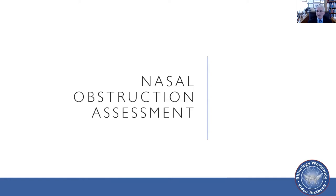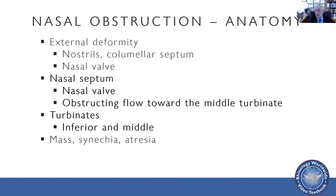How do you assess nasal obstruction in a patient? You assess the patient's anatomy, and external deformities can cause problems — deformities of the nostril, nasal valve, etc. In this chapter, we're covering the nasal septum and the nasal turbinates, particularly the inferior turbinate. The septum does make up some of the anatomy of the internal nasal valve. Other things can give you nasal obstruction, like masses, synechia, atresia, etc., but those are not covered in this chapter.